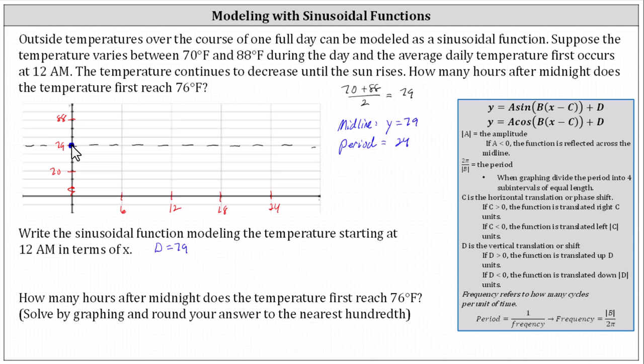And then from here because the temperature continues to decrease until sunrise, we'll follow the basic pattern for the sine function when reflected across the midline. Which means that at x equals 6 we won't plot a max, we'll plot a min of 70. So we have midline, minimum, midline, maximum, and then back to the midline. Let's go ahead and sketch the graph.